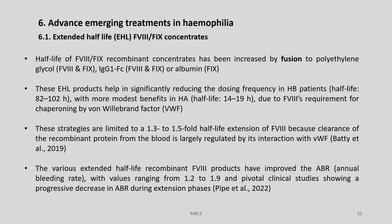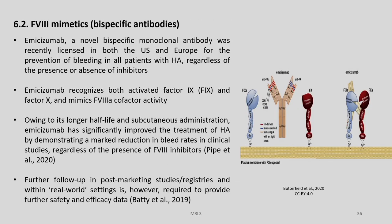The various extended half-life recombinant factor 8 products have improved the ABR (annual bleeding rate), with values ranging from 1.2 to 1.9, and pivotal clinical studies showing a progressive decrease in ABR during extension phases.